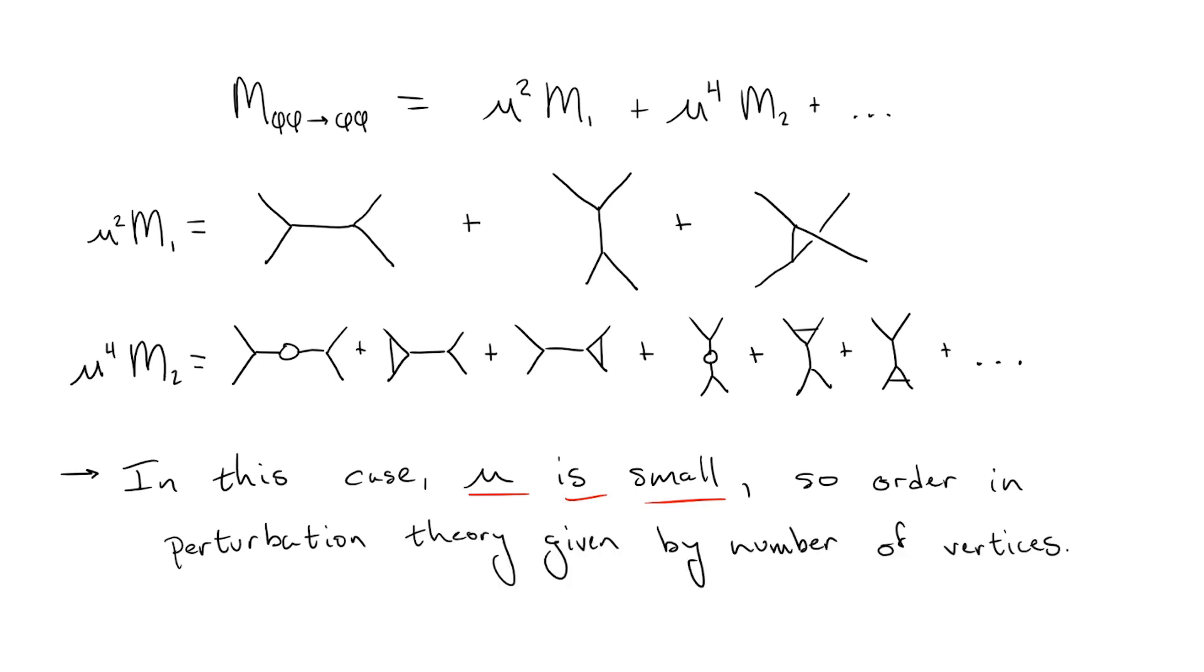So in many cases, especially with the standard model, we perturb with respect to these couplings. This means that the order of perturbation series a Feynman diagram is at is given by the number of vertices the diagram has.